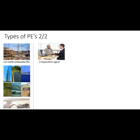A dependent agent is a person acting in a contracting state on behalf of an enterprise. Such person has and habitually exercises an authority to conclude contracts in the name of the enterprise. That person's activities can constitute a permanent establishment in the state where the activities are performed. Under BEPS Action 7, the scope of a dependent agent is expanded to include commissionaires. A dependent agent PE does not require a fixed place of business. A dependent agent can be a company or an individual, a resident or a non-resident, and an employee or not. The agent should exercise its authority habitually, meaning that it requires some degree of permanence. It should not be one-off or transitory.